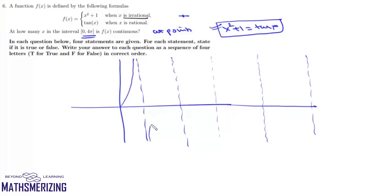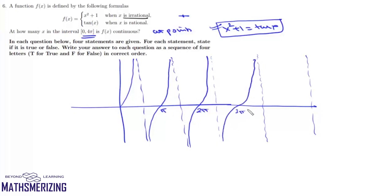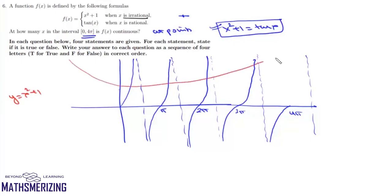Marking π, 2π, 3π, and 4π on the axis, we draw the graph of y = x² + 1 and y = 10x. These two graphs intersect at 4 points. So the number of values of x in the interval [0, 4π] where f(x) is continuous is simply 4.